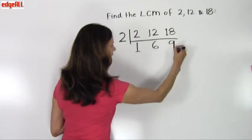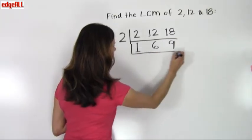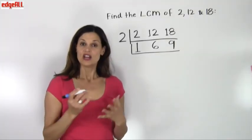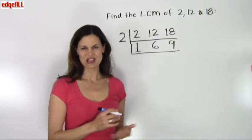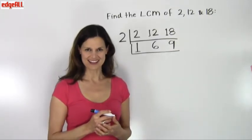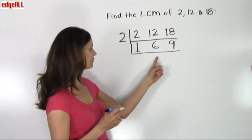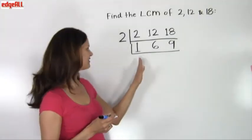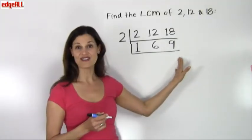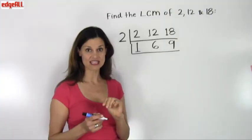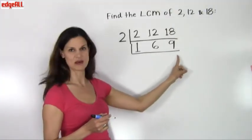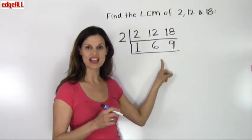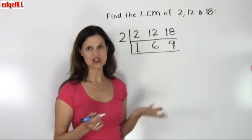Now I put another L shape around these three numbers and ask myself: is there a number greater than 1 that evenly divides all three of them? There is not. However, the number 3 evenly divides two of the numbers — 6 and 9. So if I have at least two numbers divisible by that factor, I use that factor.